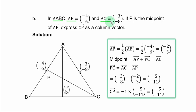If P is the midpoint of vector AB, express CP, that is vector CP, as a column vector. So you have triangle ABC.